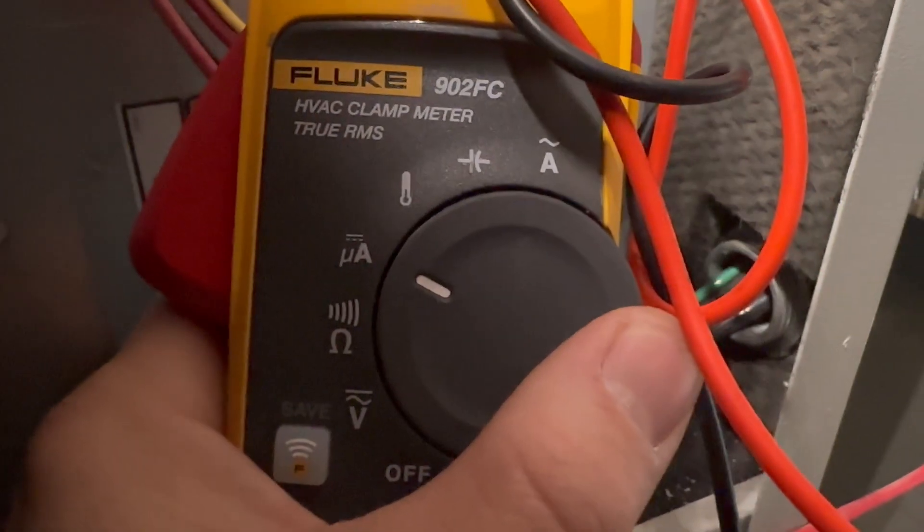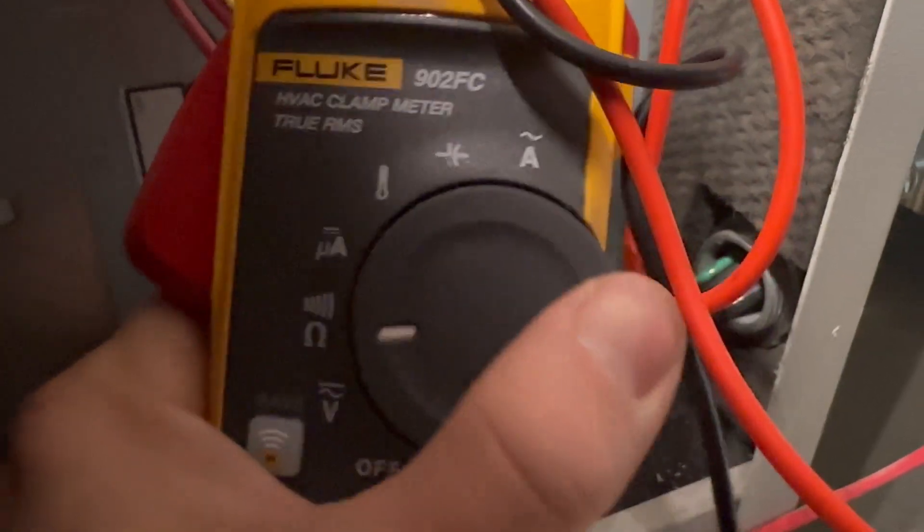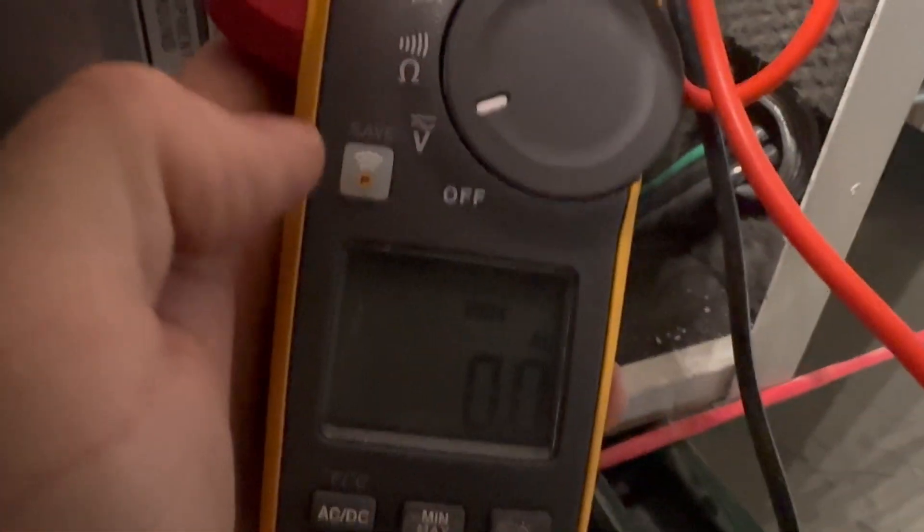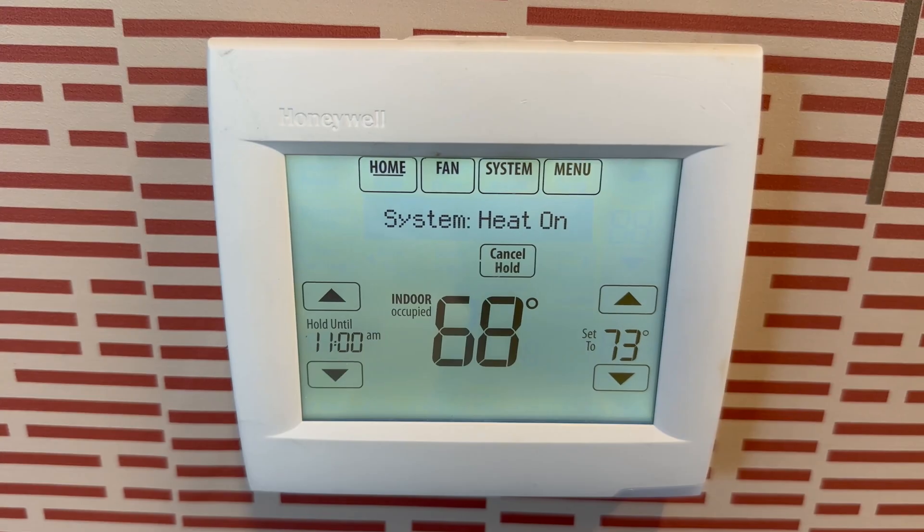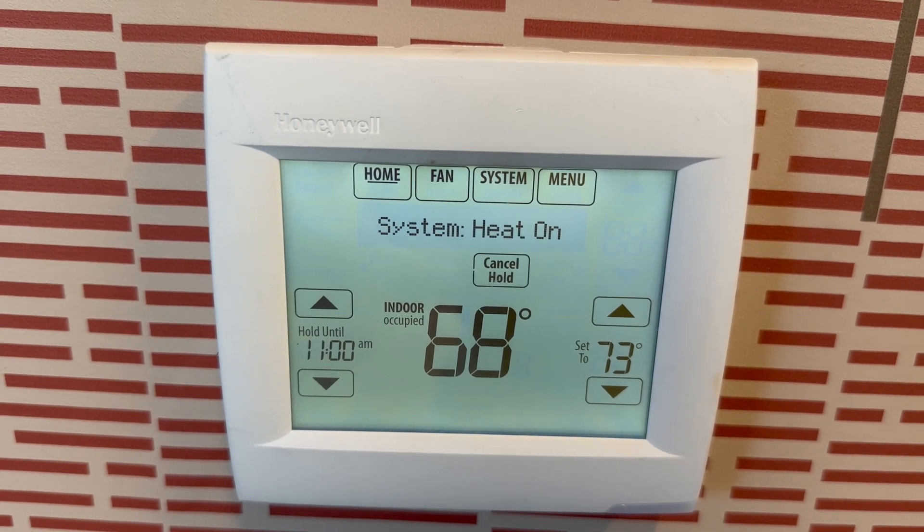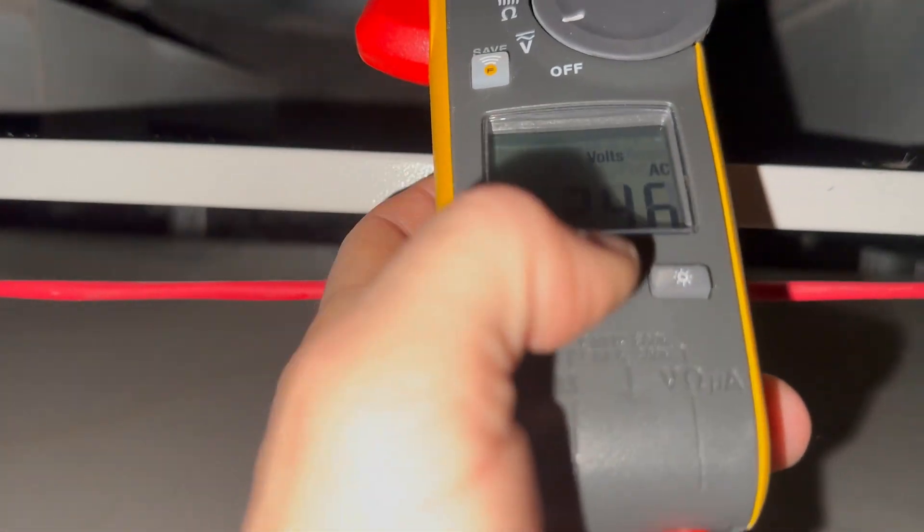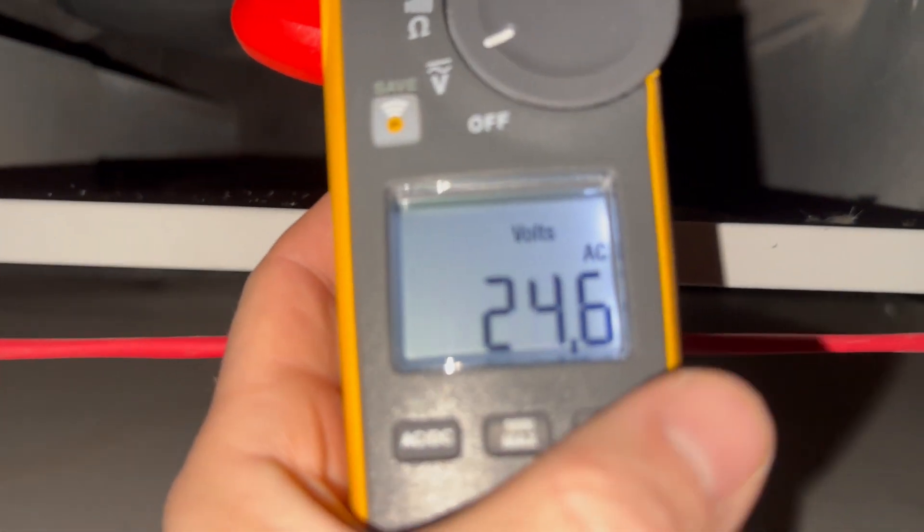Now I'm going to set my multimeter to AC voltage. I would usually just jump out the heat to force it on but I'm going to use the thermostat and we have 24 volts across the heat sequencer coil.